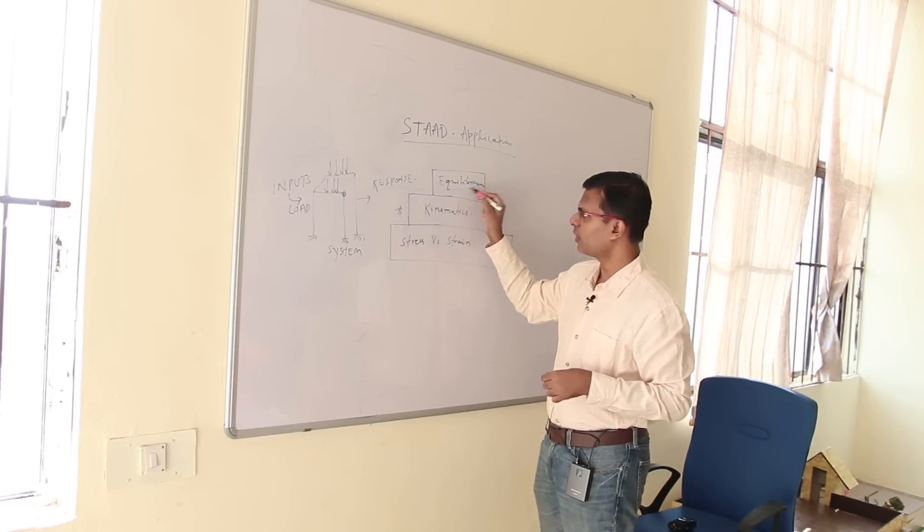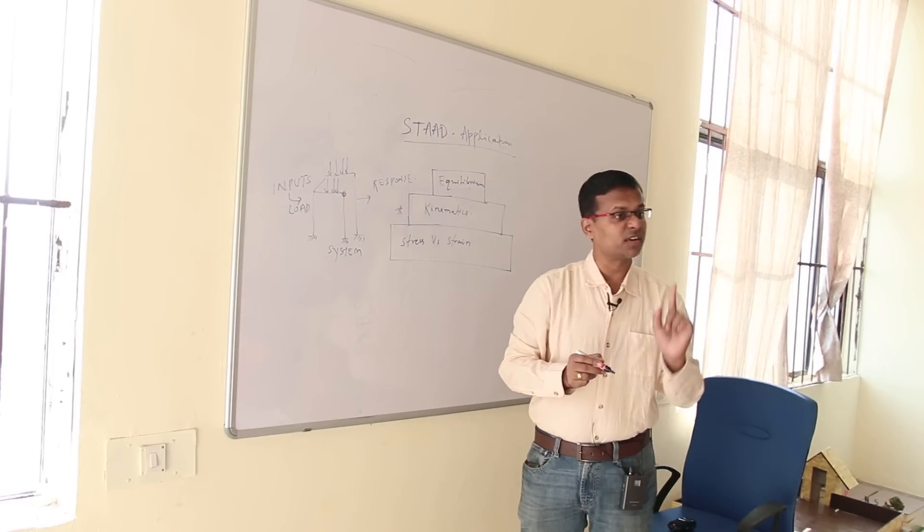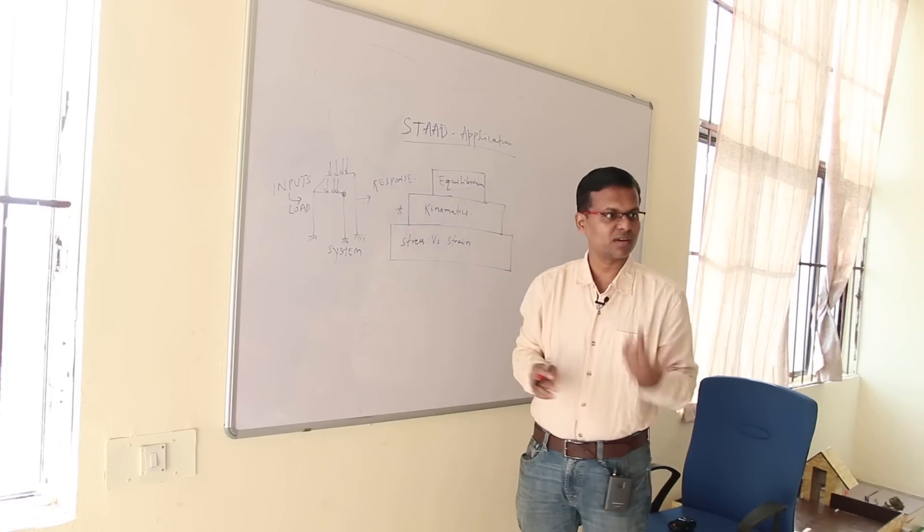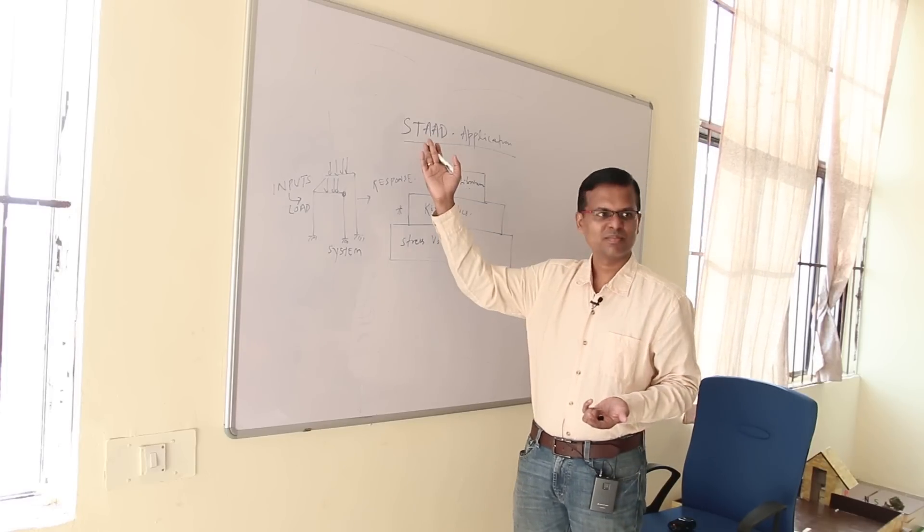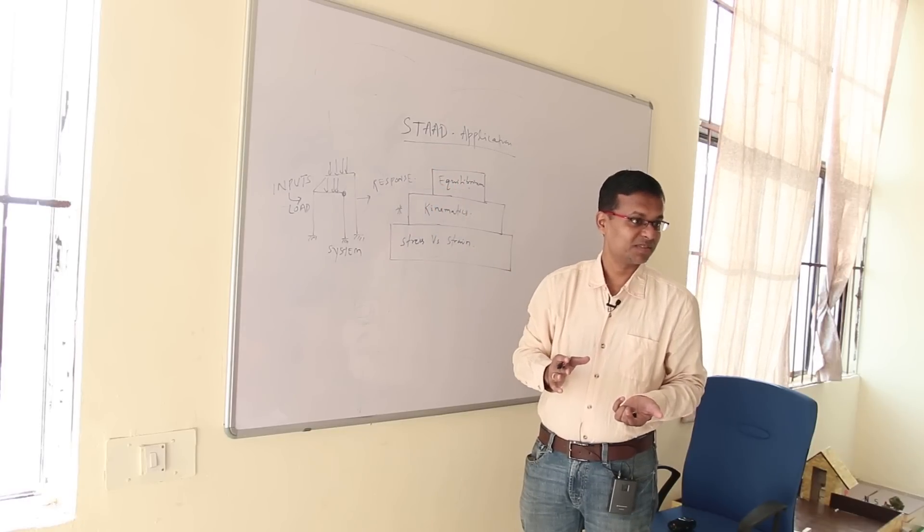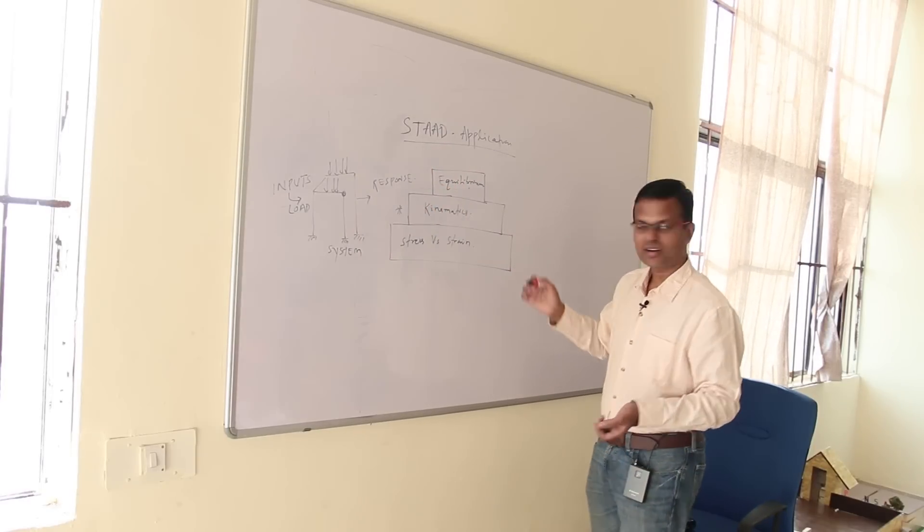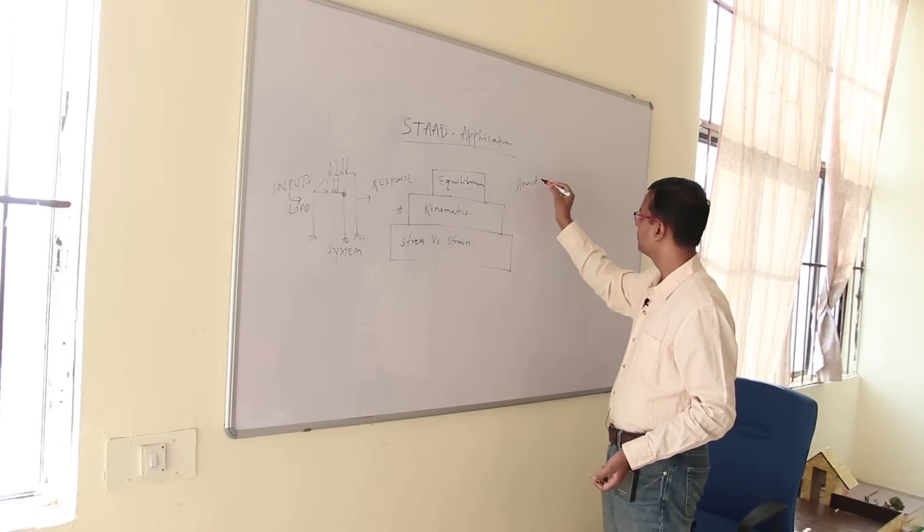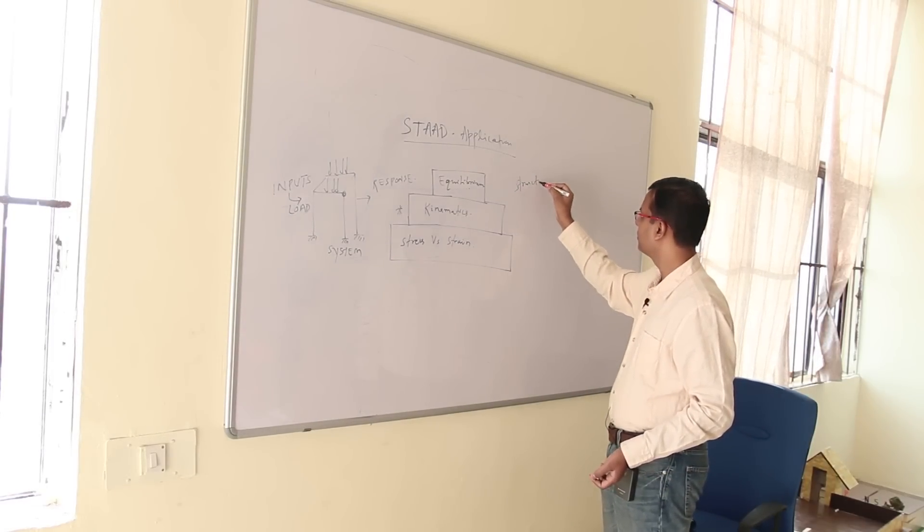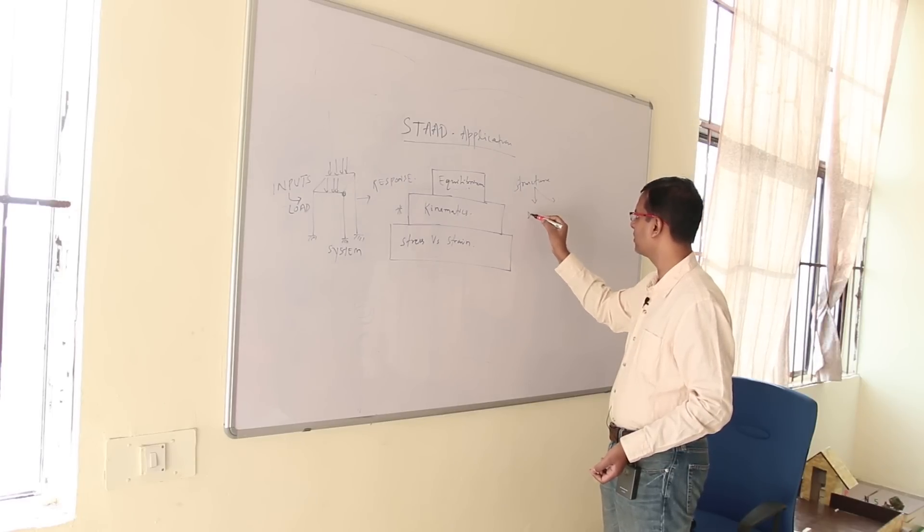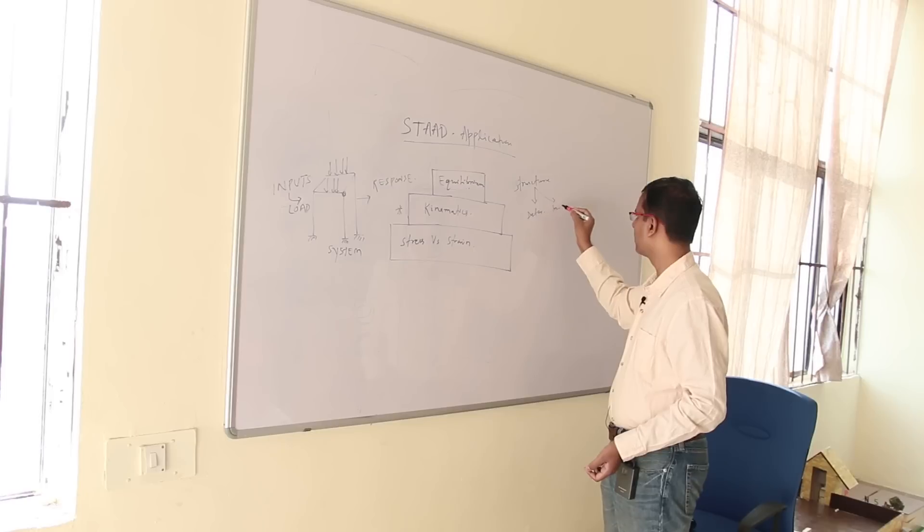So, equilibrium condition you have to check for any of the structure. This is the first thing that we are going to use at start. You have to have the equilibrium, but there are certain challenges. What are those? Structure having two aspects: one is determinate, one is indeterminate.